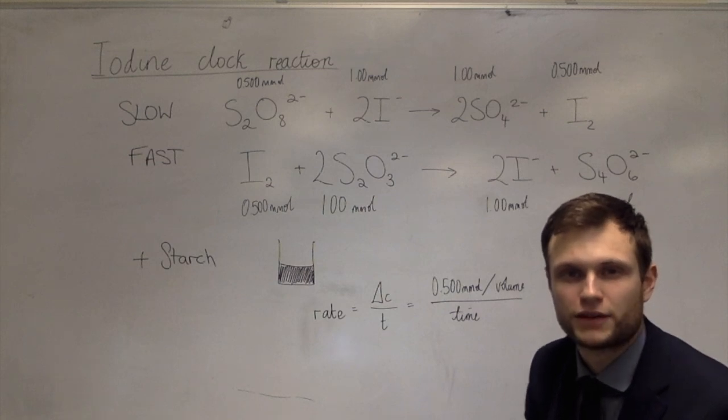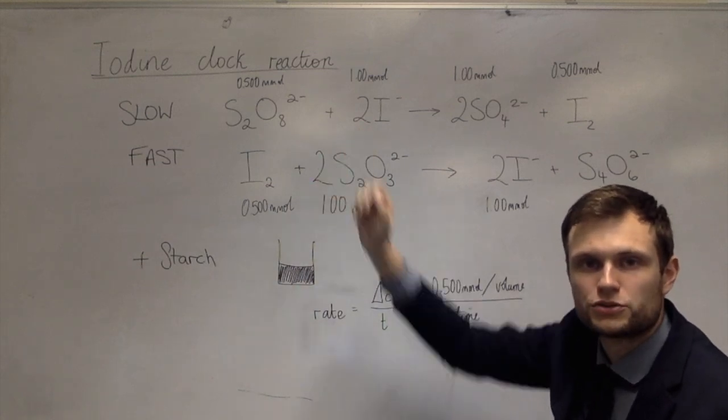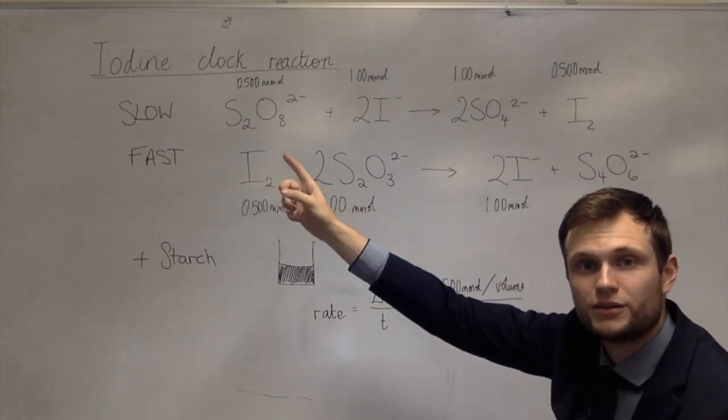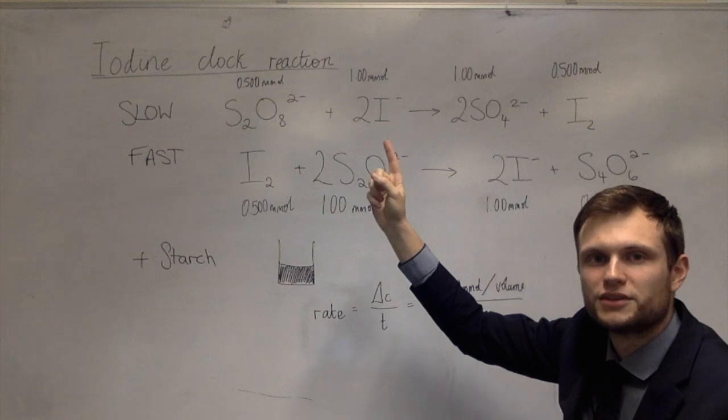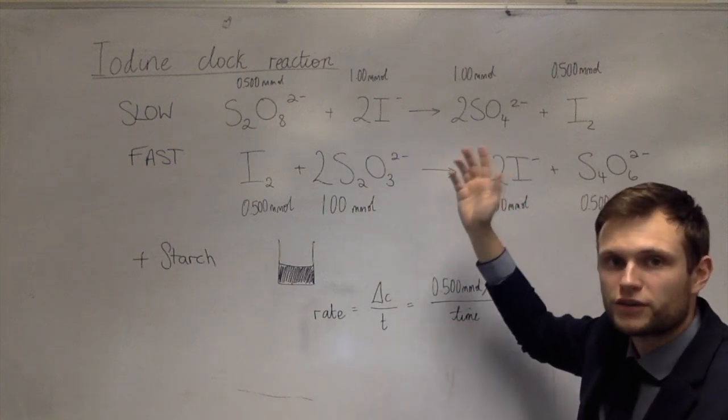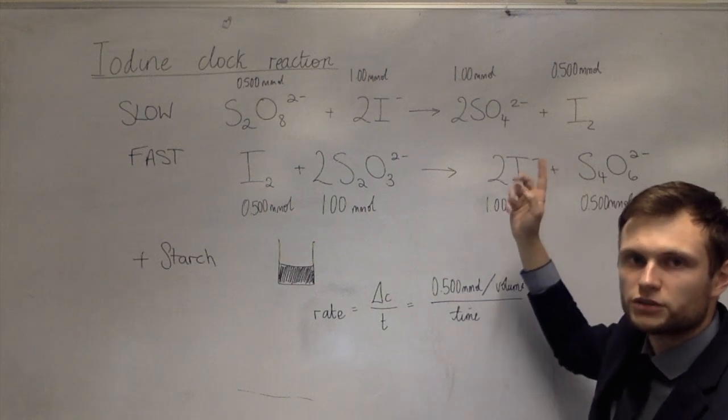Now the definition for the rate of the reaction is where the stoichiometric coefficient is one. So it would be the rate of disappearance of peroxidised sulfate or half the rate of disappearance of iodide or half the rate of production of sulfate or the rate of production of iodine.